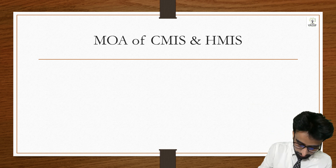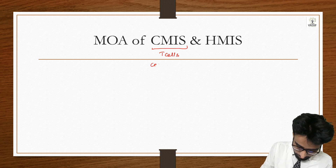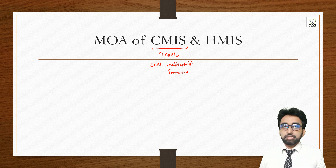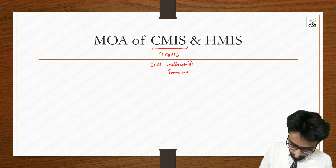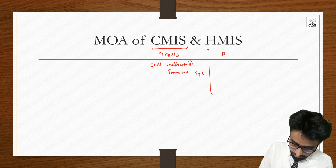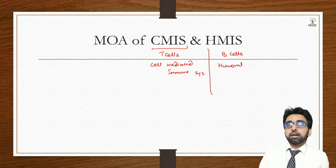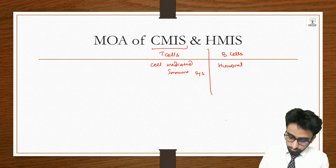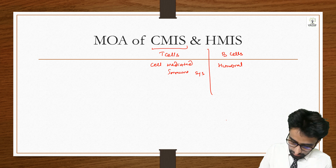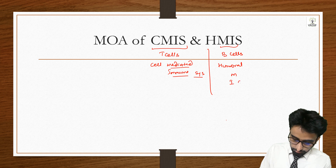In this lecture we have told you that T-cell immunity is called the cell-mediated immune system, and B-cells are called the humoral mediated immune system or antibody mediated immune system.